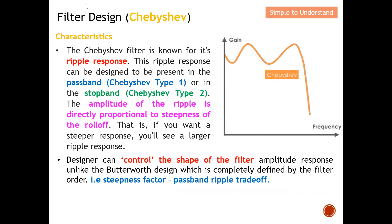Next, let's move on to Chebyshev. The Chebyshev filter is known for its ripple response — there are lots of ripples in the pass band. This ripple response can be designed to be present in the pass band, which uses Chebyshev Type 1, or in the stop band, which uses Chebyshev Type 2. The amplitude of the ripple is directly proportional to the steepness of roll-off: if you want a steeper response, you will see a larger ripple response. Designers can control the shape of the filter amplitude response, unlike the Butterworth design which is completely defined by filter order.